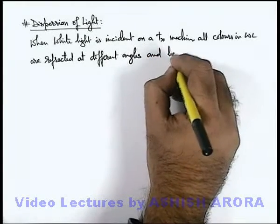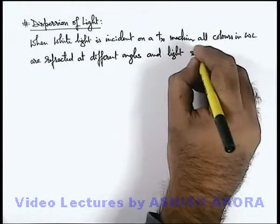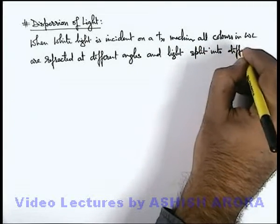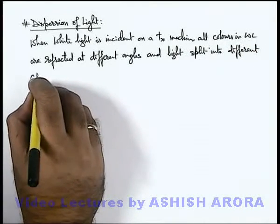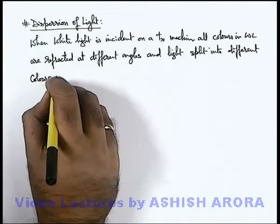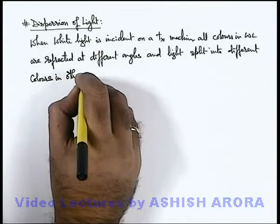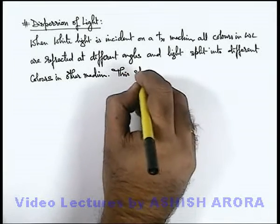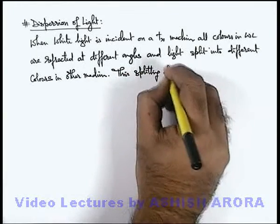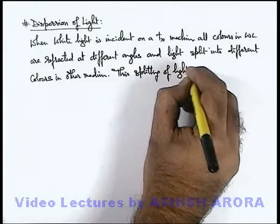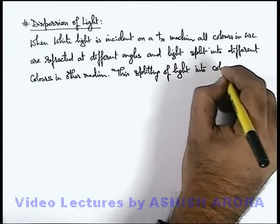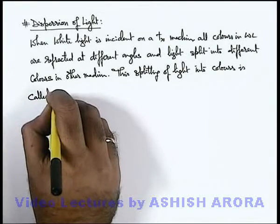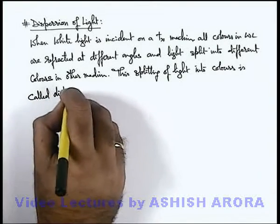Light splits into different colors in the medium in which it is being refracted. This splitting of light into colors is called dispersion of light.